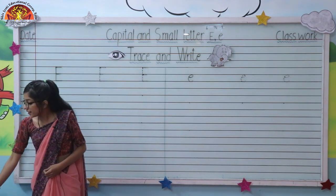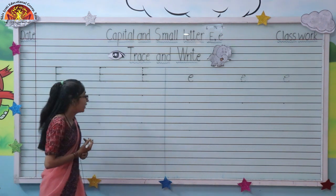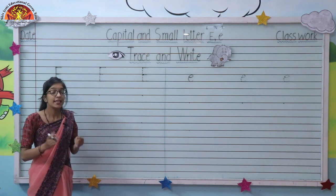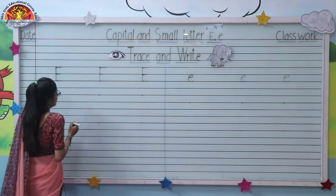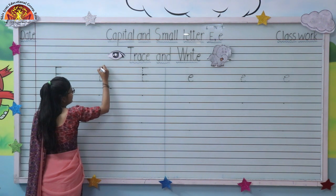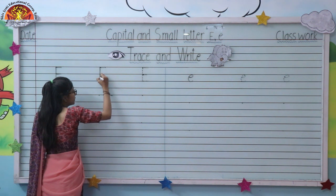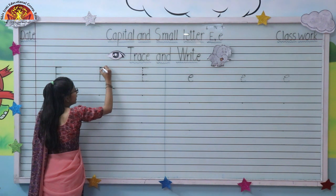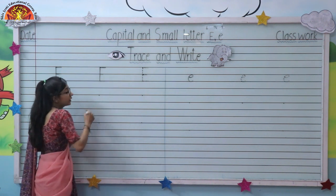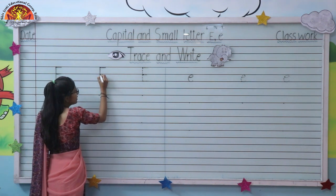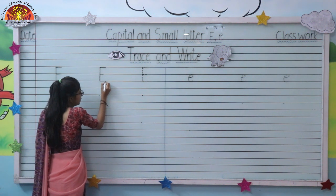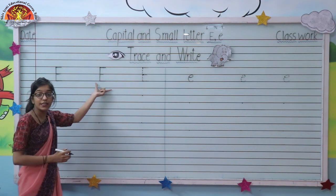Now let's start writing. Take out your pencil and hold it properly. First we will trace capital letter E. Start from the first line, make one standing line touching the second and third line. Then make one sleeping line, one more sleeping line — a small sleeping line — then one more sleeping line. Like this: capital letter E.